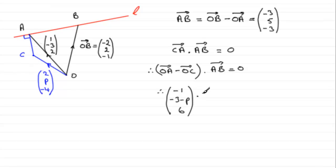And we need to dot this now with the vector A to B, which we have up here, as minus three, five, minus three. And that equals zero. Now we dot these two vectors together. What we do is we do the sum of the products of the components. So in other words, we're therefore going to have minus one multiplied by minus three, three for the first bit, plus the result of five times the minus three minus P. And then the six times the minus three. And this will equal zero.